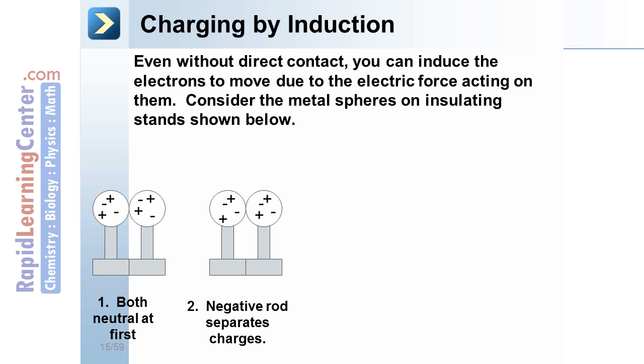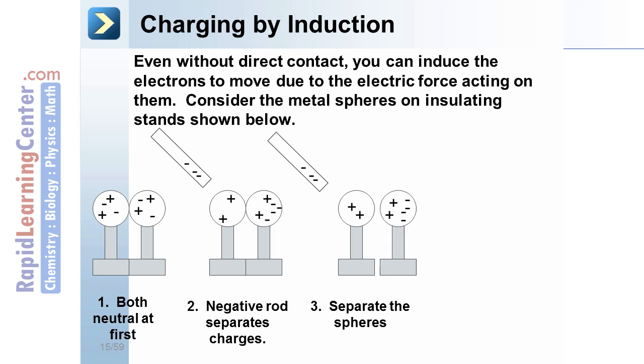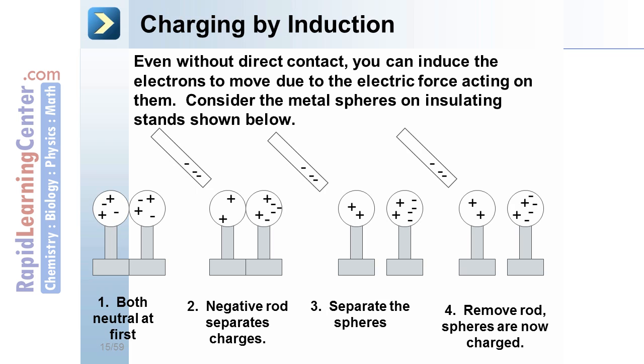Imagine a negative rod is brought near those two metal spheres, but not touching. Note how the negative charges are repelled away. Now those spheres are separated. The charged rod is even removed.